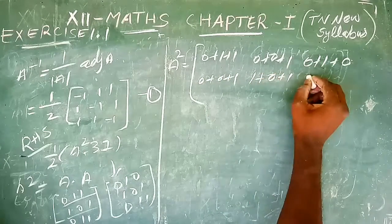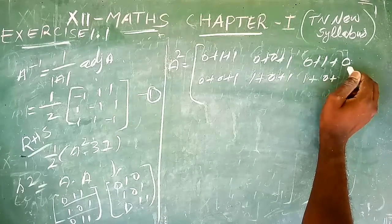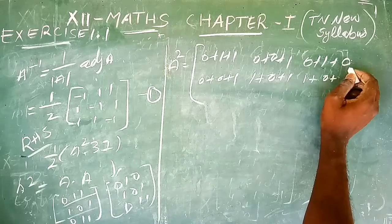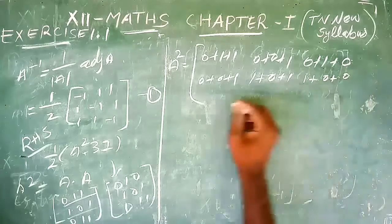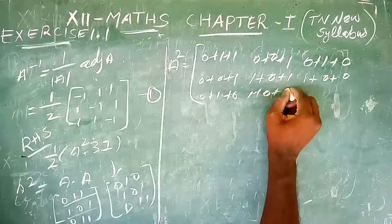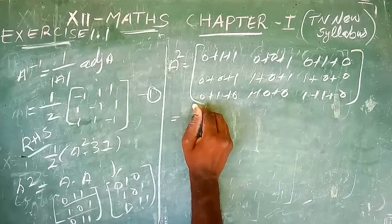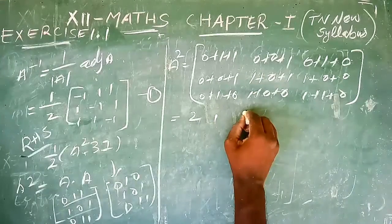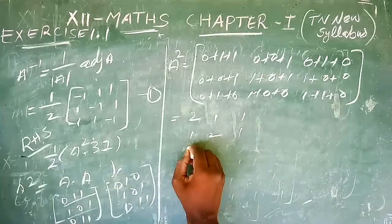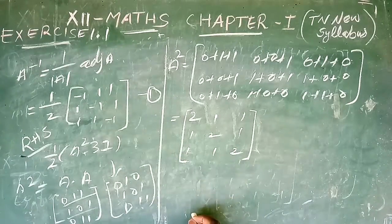Completing the multiplication: first column second row, second column second row, third column gives 1×0 + 1×1 = 1. Similarly for the third row with all three columns. Finally, A² equals [[2, 1, 1], [1, 2, 1], [1, 1, 2]].